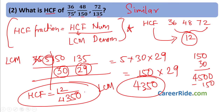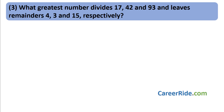Question 3: What greatest number divides 17, 42 and 93, leaving remainders 4, 3 and 15 respectively? A useful tip for identifying the type of sum: if you have to find the greatest number, you hear the word 'greatest' in HCF — Highest Common Factor — or GCD — Greatest Common Divisor. So here we need to find the GCD or HCF, not LCM.